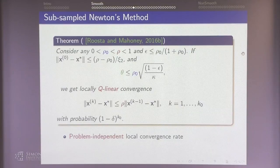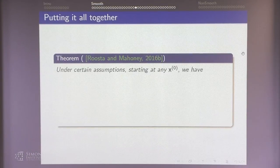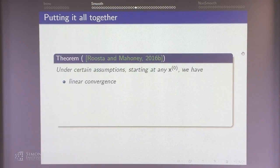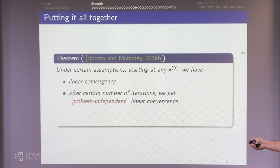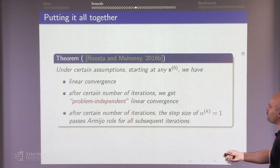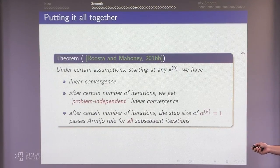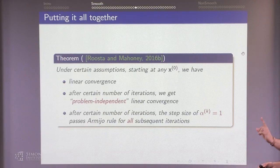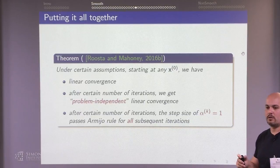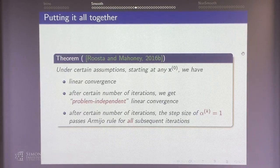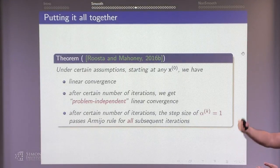Putting it all together — local plus global — starting from an arbitrary point, you have linear convergence throughout. After a certain number of iterations, you transition to a problem-independent linear rate. And finally, after even more iterations, you no longer need line search — step sizes are 1. Unit step size is the natural step size of the full Newton method. As Professor Nocedel says, any optimization algorithm for which the unit step length works has some wisdom in it.